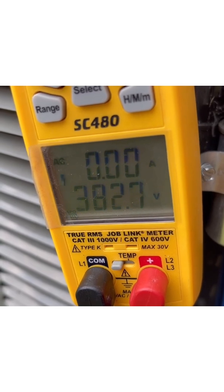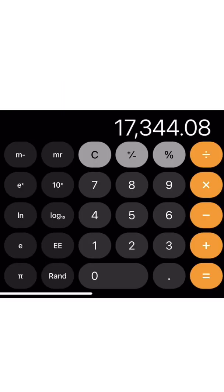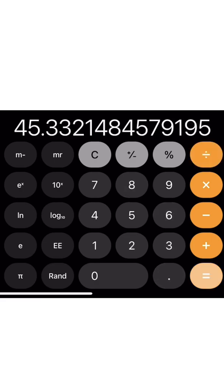We're going to go back to our calculator and we're going to divide it by the number that we just got, the voltage. There it is, 45.33.